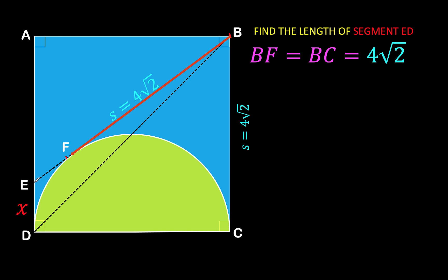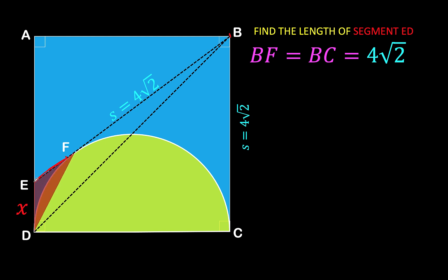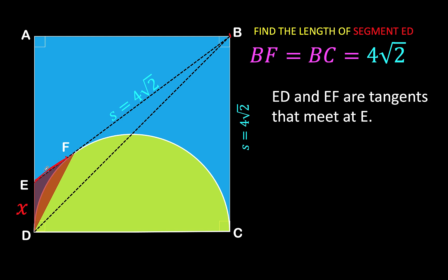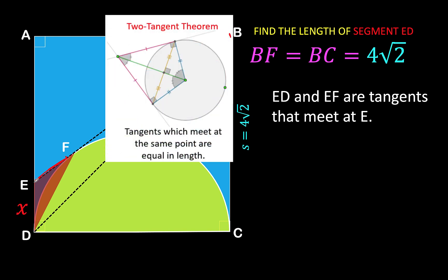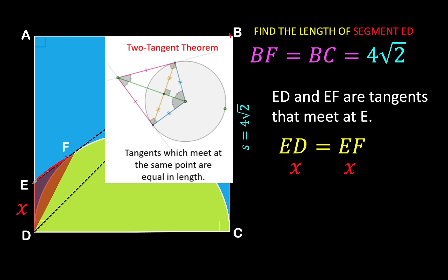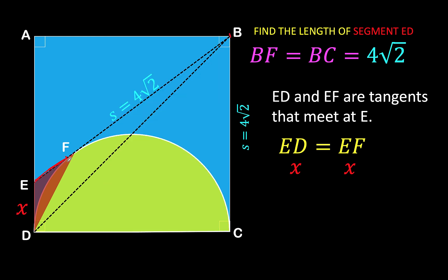Now we need to find the length of EF so we can use the Pythagorean formula on the upper right triangle. Notice that ED is tangent to the semicircle and EF is also tangent to the same semicircle, meeting at external point E. By the two tangent theorem, ED and EF are equal in length. Since ED = X, EF must also equal X.